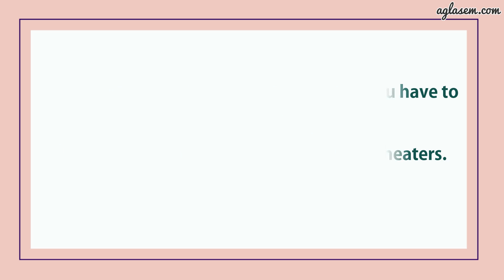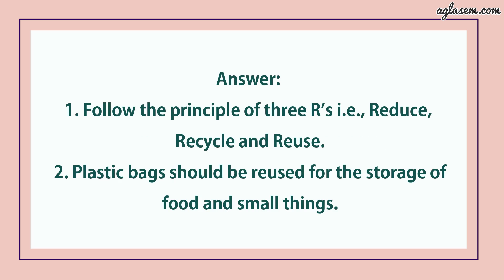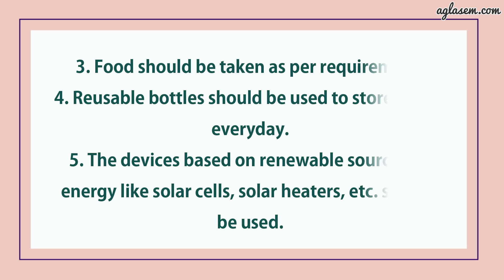Question number 5 says: what can you as an individual do to reduce your consumption of various natural resources? First, we have to follow the principle of three R's — reduce, recycle and reuse. Second, plastic bags should be reused for the storage of food and small things. Third, food should be taken as per requirement. Fourth, reusable bottles should be used to store water every day. Fifth, devices based on renewable sources of energy like solar cells and solar heaters should be used.